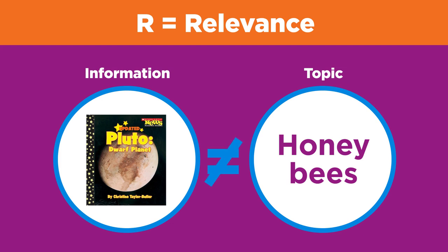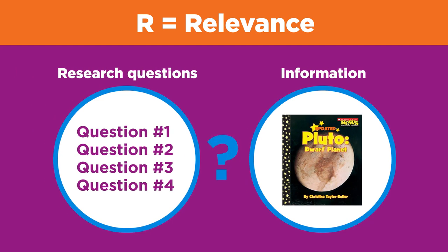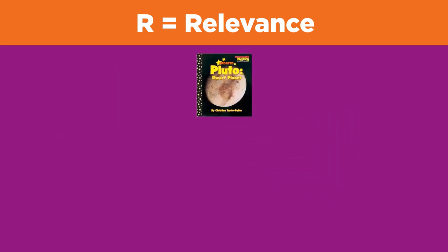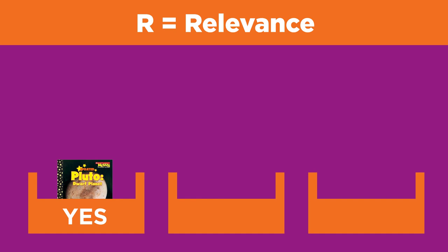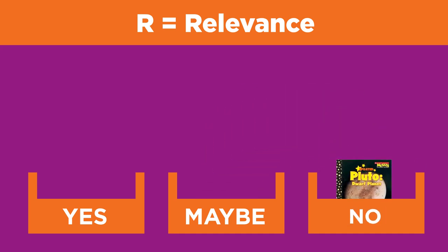Relevance: ask yourself, does the information match my topic? Determining this may take a little more time. First, review your research questions — does the source provide any answers to them? As you determine relevance, sort potential sources into three piles: Yes — this source answers one or more of your questions, has the right amount of detail, and is written at a level you can understand. Maybe — this source may answer some questions but you may need to read further to tell, so save it for later.